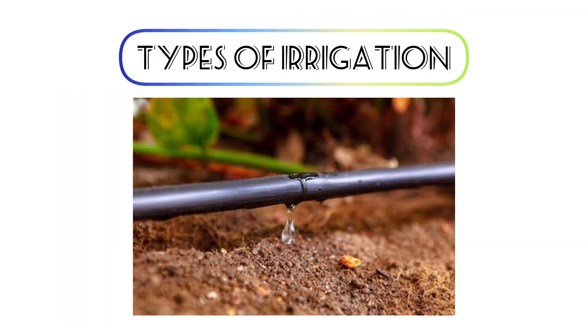In the process of drip irrigation, water drops fall on the root of every plant within the system.